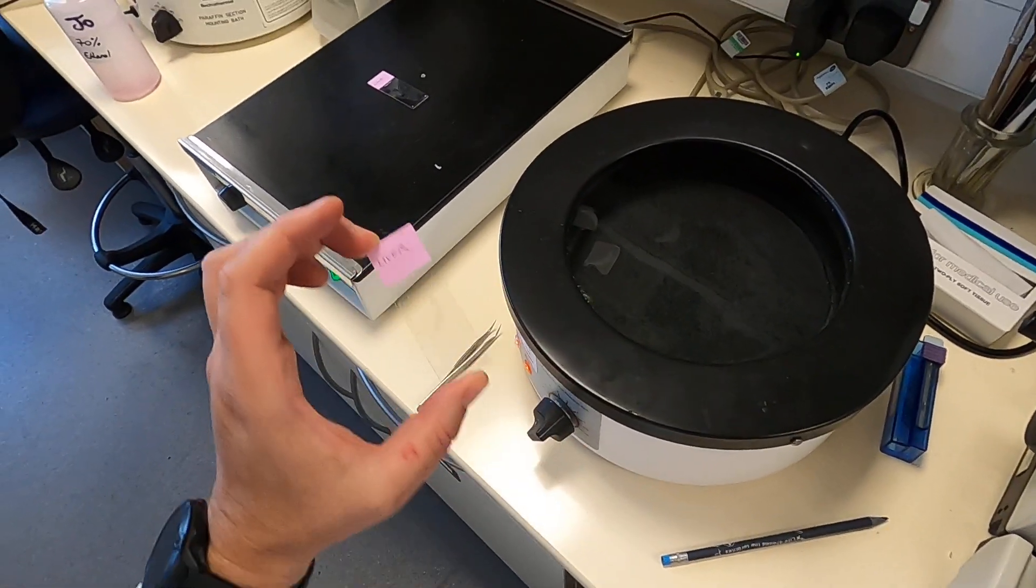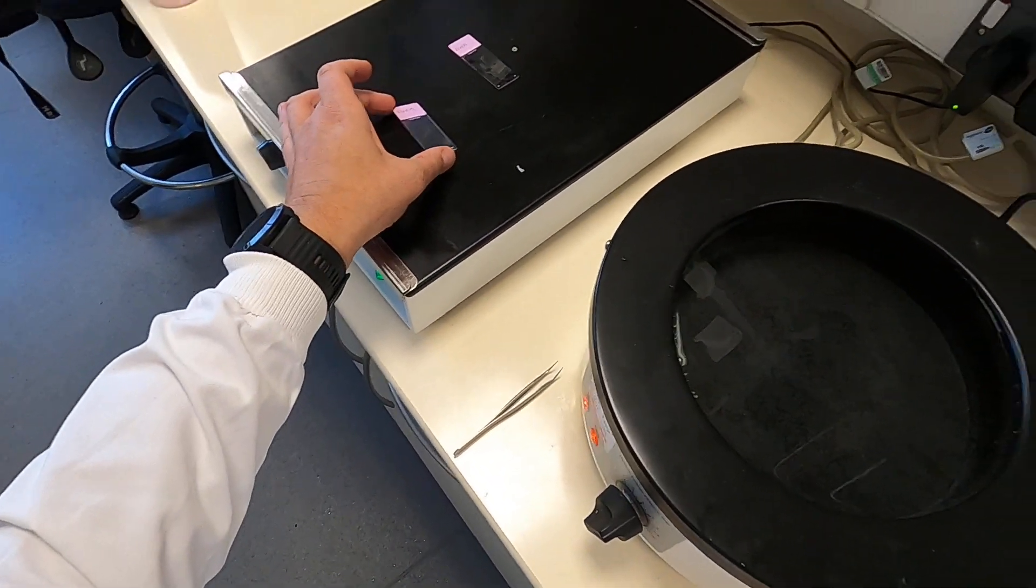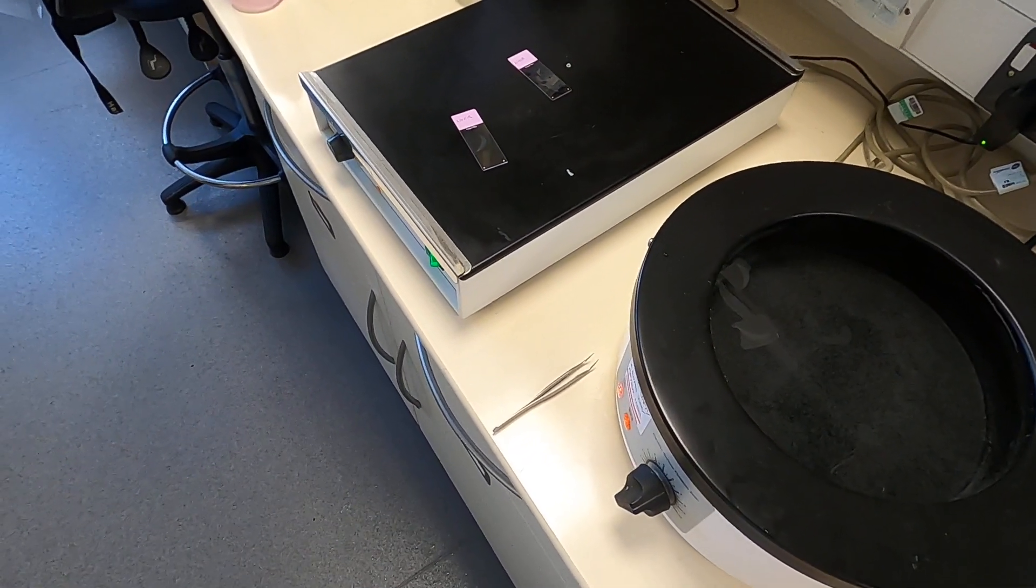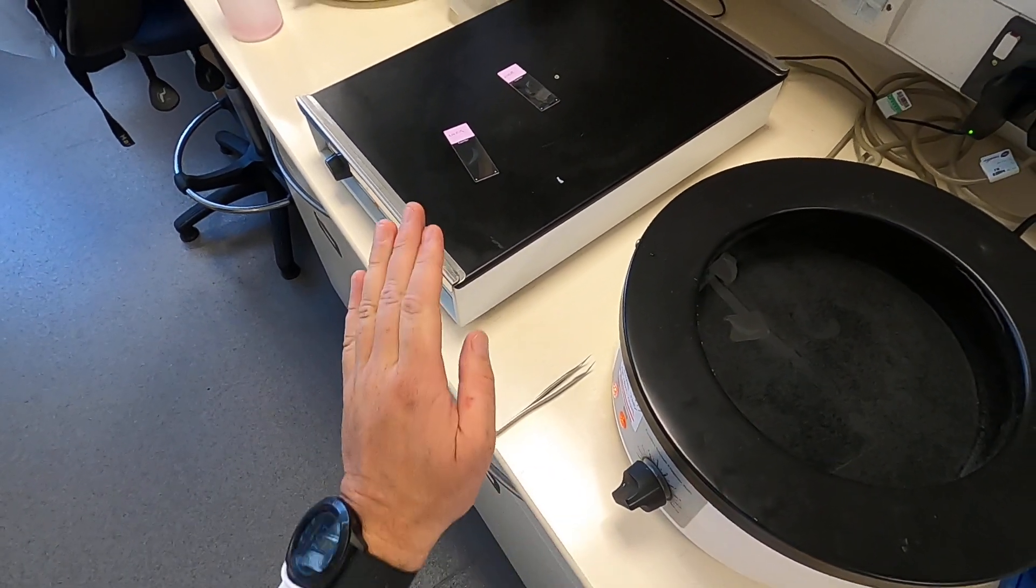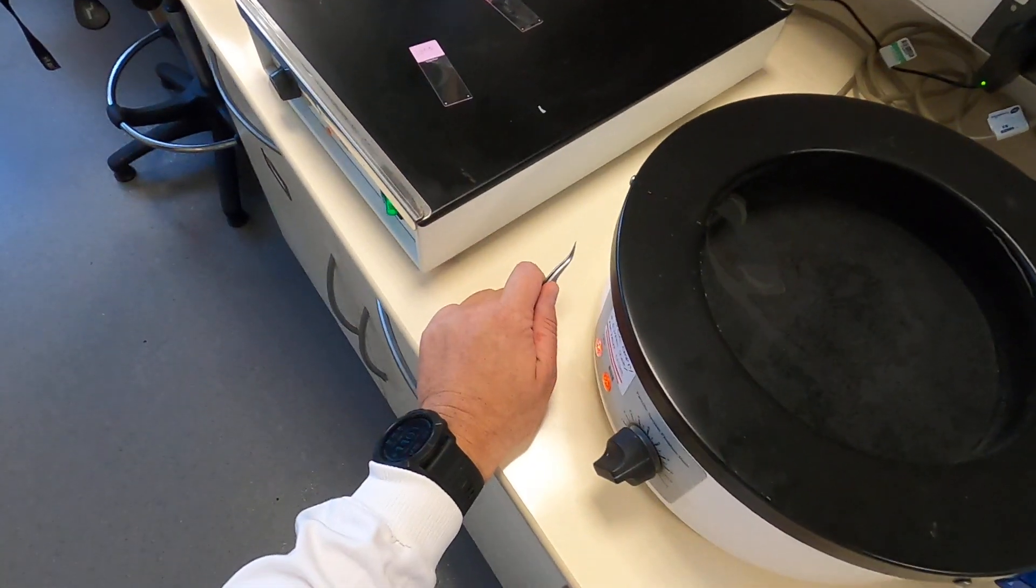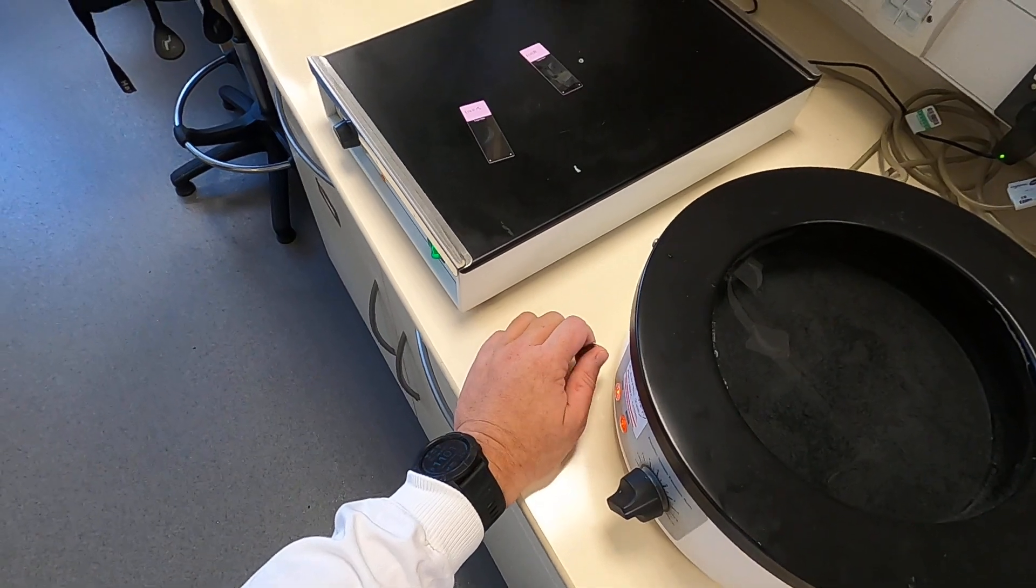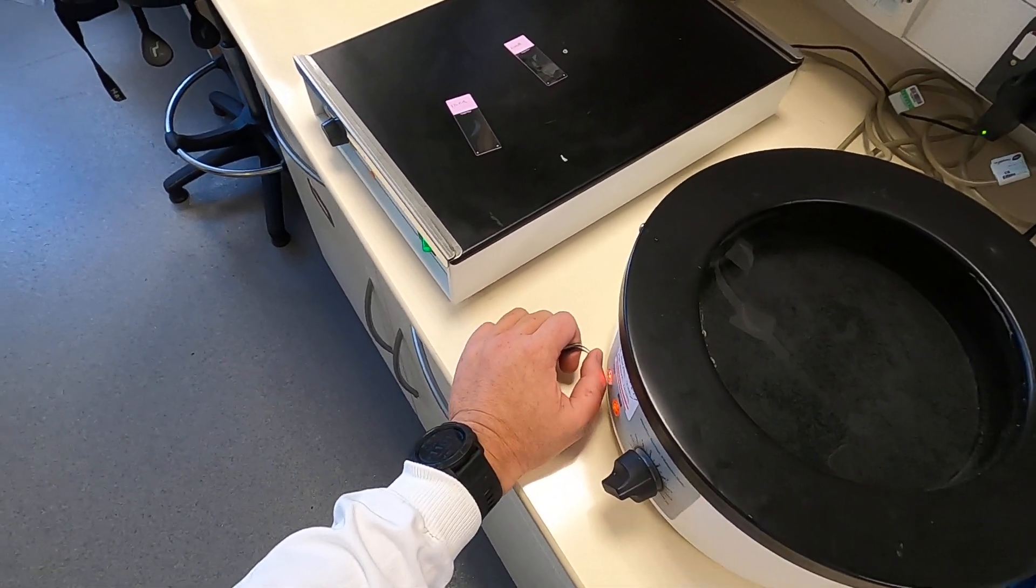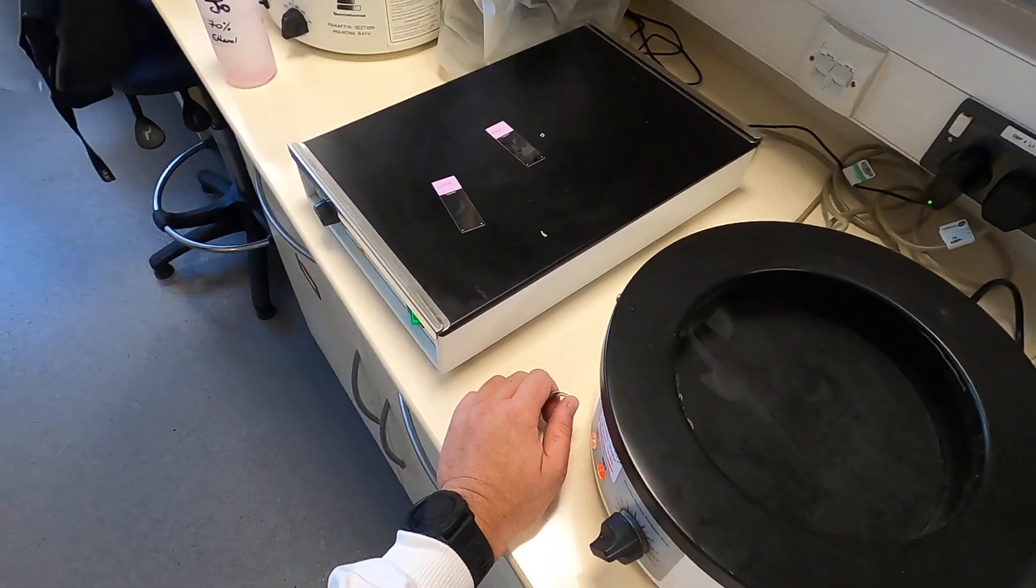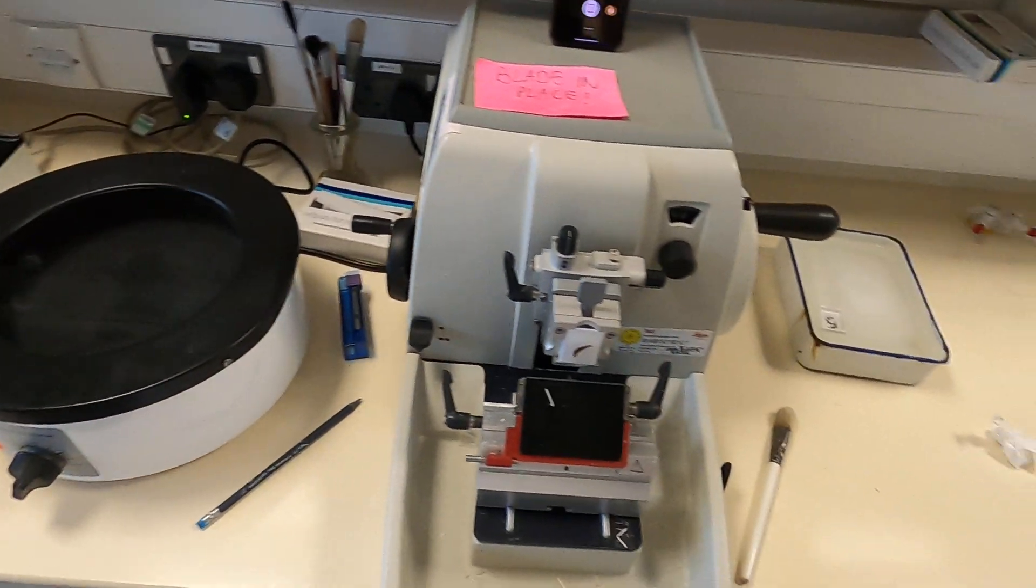When it's all melted, your section is sufficiently adherent to the slide. If you don't have it adherent to the slide, when you come to staining, it'll just float off. So the melting step is absolutely crucial. Don't avoid this bit when you are doing your lab practicals. Melt it properly, take the time, otherwise you'll lose your whole section.